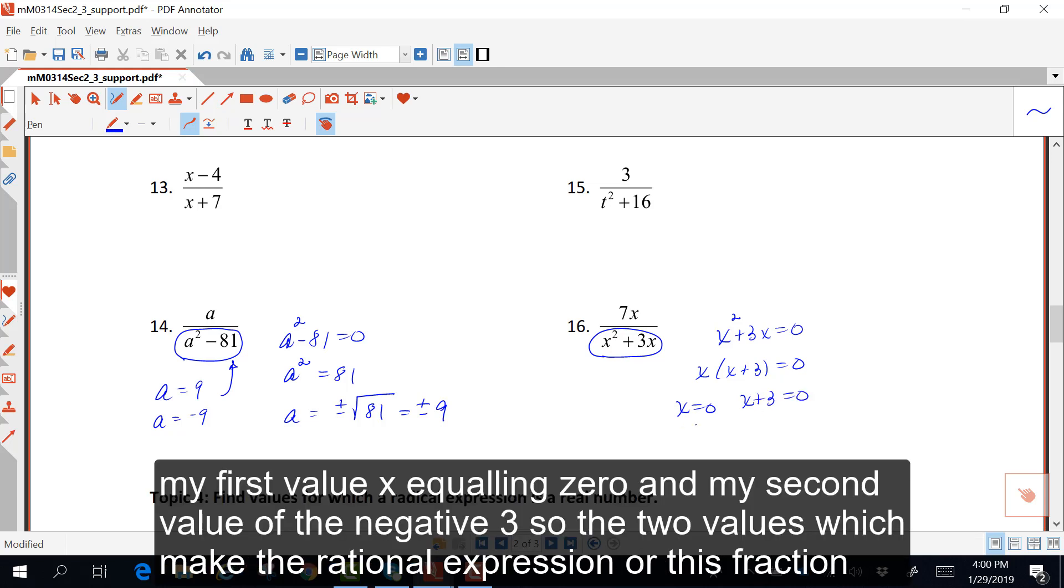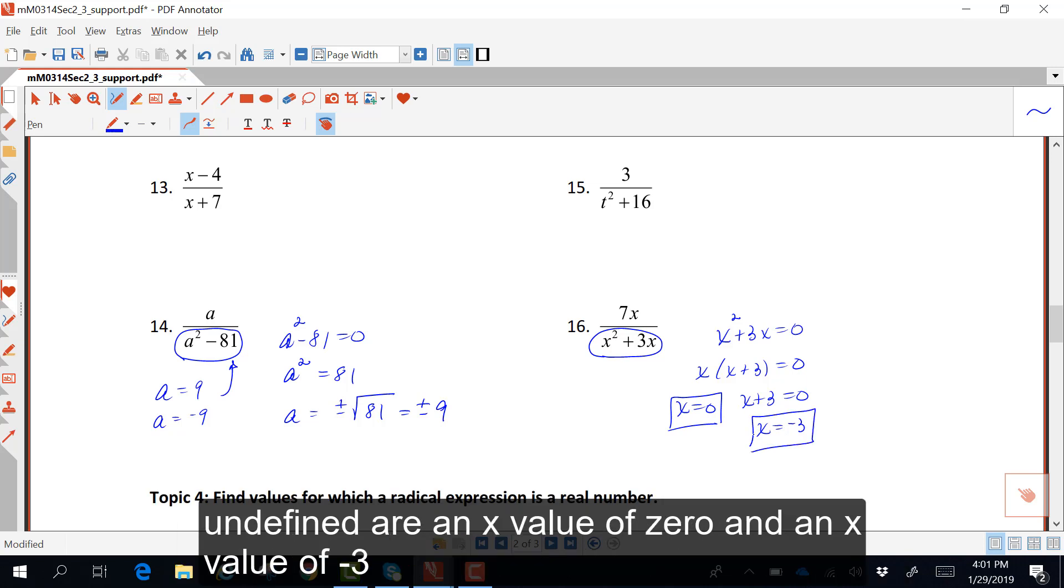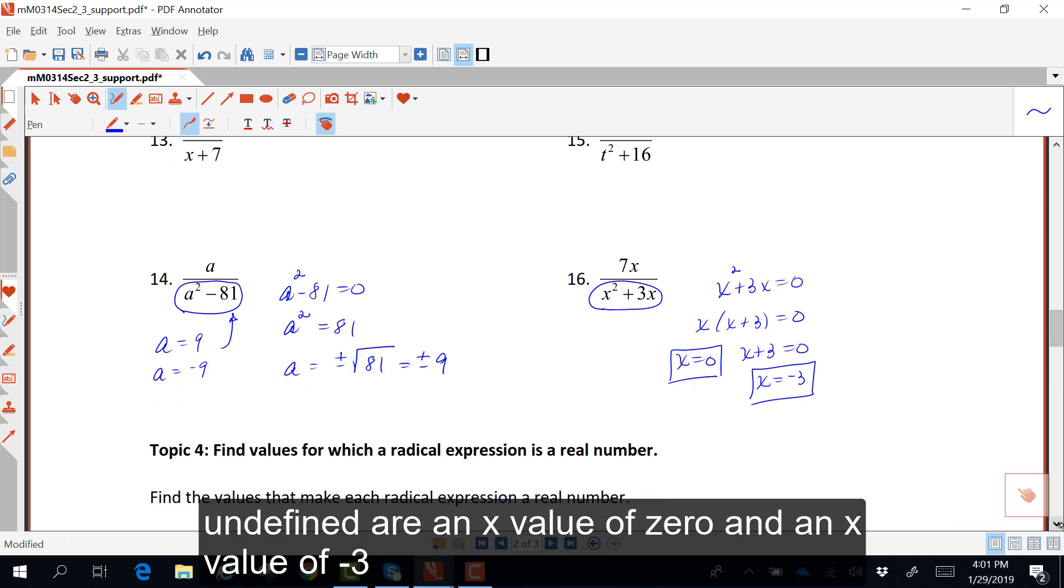My first value, x equaling 0, and my second value would be a negative 3. So the two values which make the rational expression, or this fraction, undefined, are an x value of 0 and an x value of negative 3.